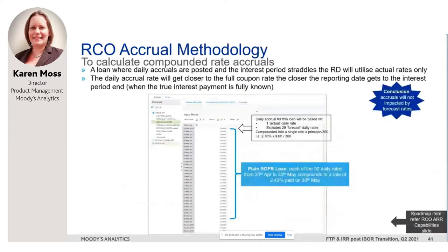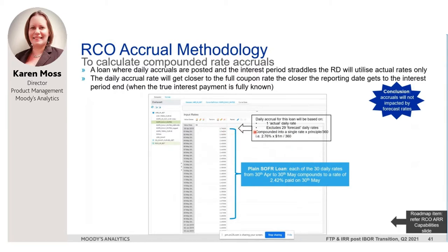A second technical detail concerns FTP accruals. If daily accruals are being posted to your ledger, we'll be making an enhancement to ensure that only known actual rates are used in the accrual calculation. For example, despite the full 30-day compounded rate being calculated for cash flow purposes for projected FTP as 2.42 percent, the FTP accrual will exclude any forecast rates and only be based on actuals — so in this example it would be based on the single rate of the 30th of April, which here is 2.76 percent.